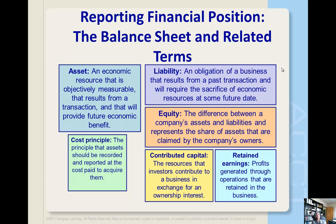The second type of equity is generated through profitable operations. Profits that are retained in the business are called retained earnings. In contrast, profits that are distributed to the owners are known as dividends.